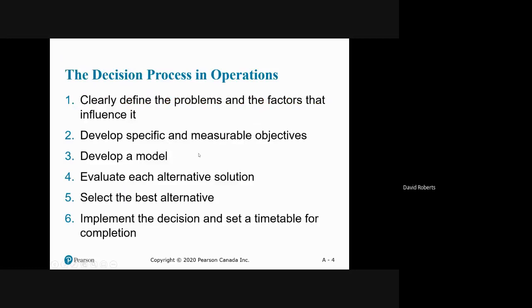You need to go through the process: clearly define the problems, identify the measurable objectives, develop the model which has to do with the probabilities and the weight of each of the probabilities, come up with alternatives such as build large plant, medium plant, small plant, or do nothing.